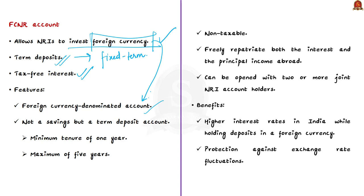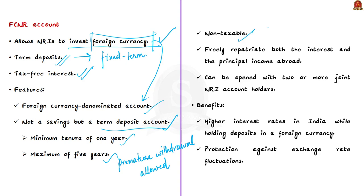FCNR accounts are term deposit accounts — fixed term investments with a minimum tenure of 1 year and maximum of 5 years. Premature withdrawal is allowed by banks, but interest is paid only after 1 year. The interest income is non-taxable under Indian law, and NRIs can freely repatriate both interest and principal abroad. FCNR deposits also make NRIs eligible for loans in India and can be opened with two or more joint NRI account holders.